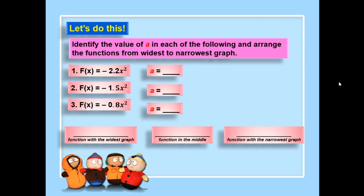Identify the value of a in each of the following quadratic functions and arrange the functions from widest to narrowest graph. Number 1: the function defined by negative 2.2x squared. Number 2: the function defined by negative 1.5x squared. Number 3: the function defined by negative 0.8x squared. Identify the values of a and arrange the curves from widest to narrowest.